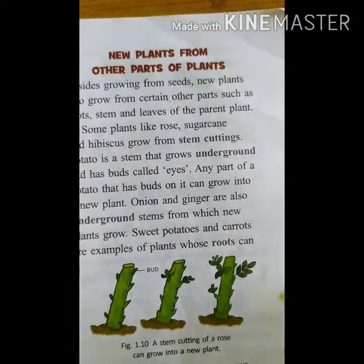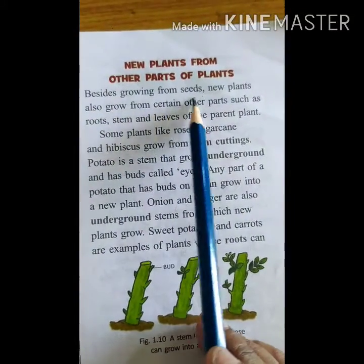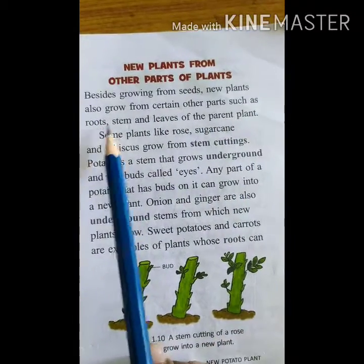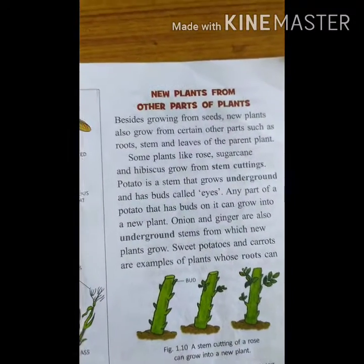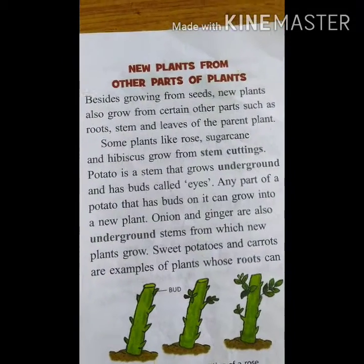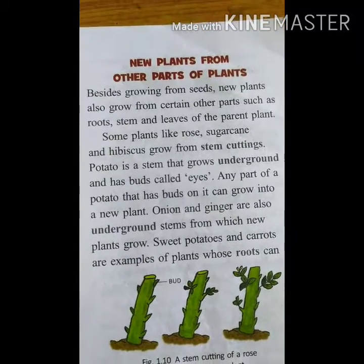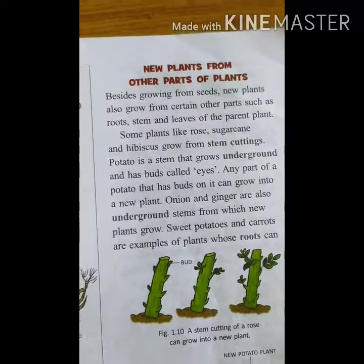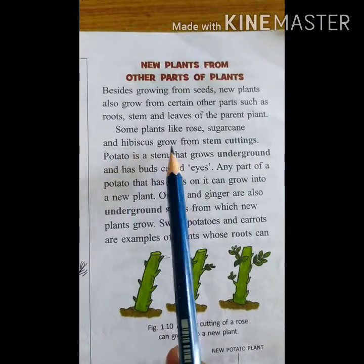New plants can also grow from certain other parts such as roots, stem, and leaves of the parent plant. So not only from seeds - new plants can grow from the stem, root, leaves, and other parts as well. The parent plant is the main plant which bears the fruits.